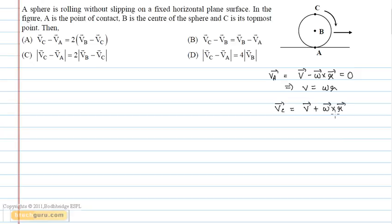And we know that the velocity of point B is same as the velocity of the center of mass, that is Vb equals V.